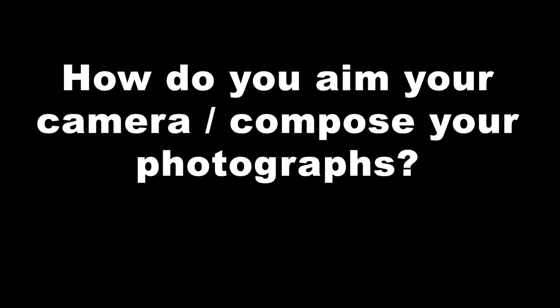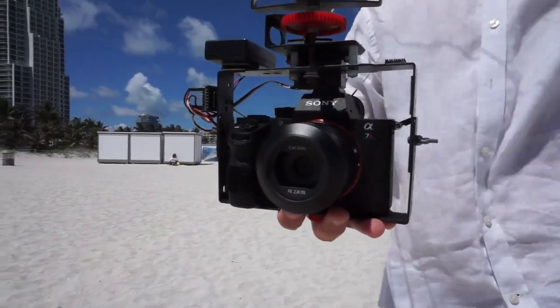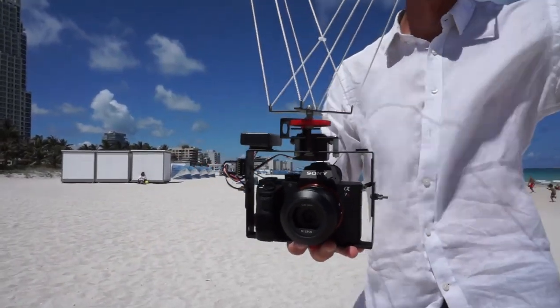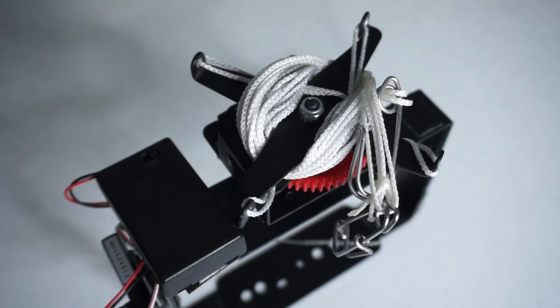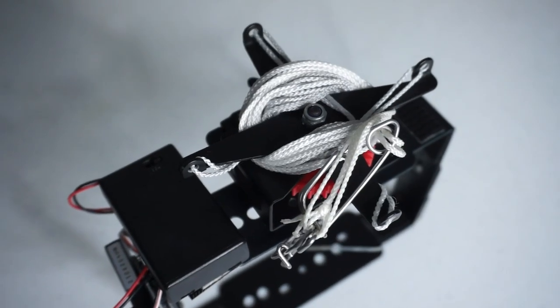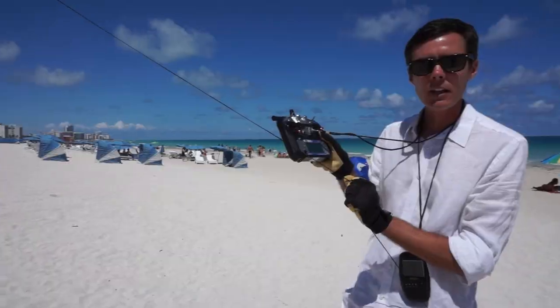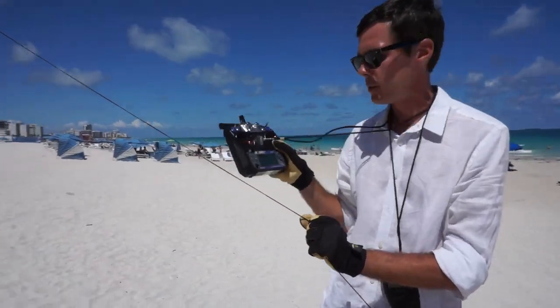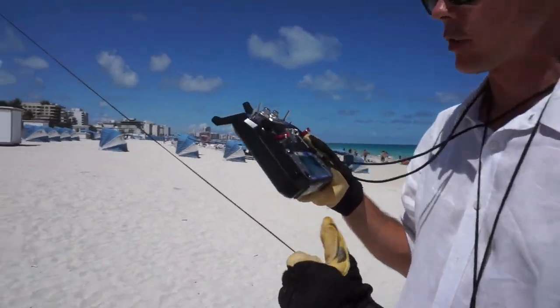How do you compose your photographs once your camera is up on your kite? The camera rig that I built to hold my camera while it's on my kite has a little electronic servo motor at the top and that allows me to aim my camera in any direction using a wireless remote control from the ground.